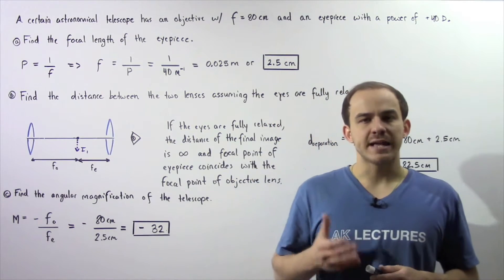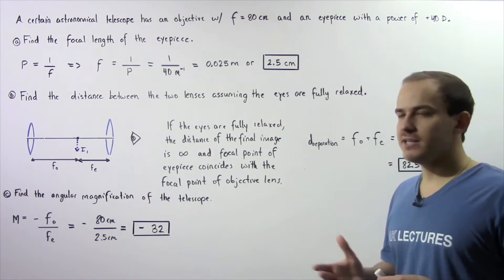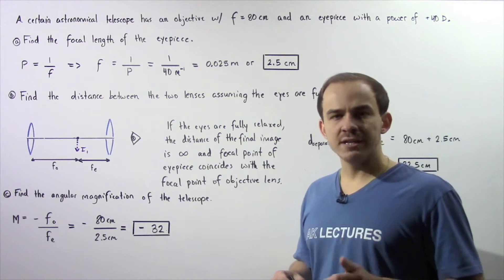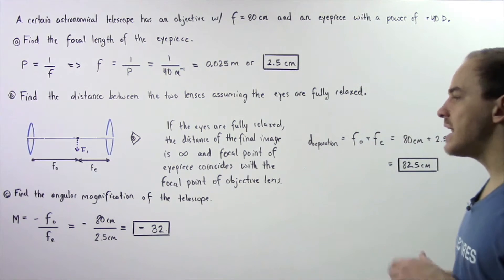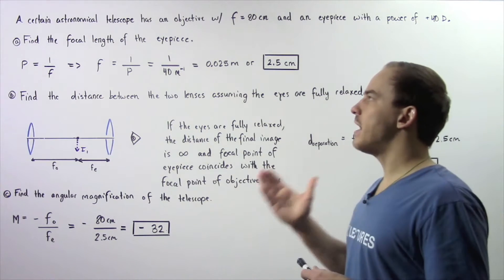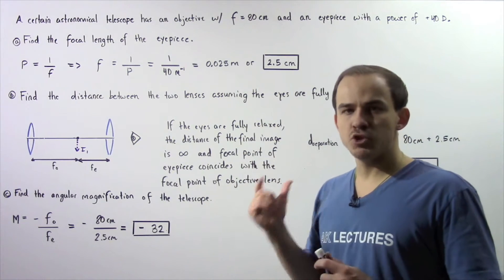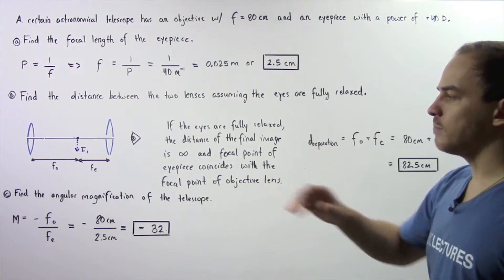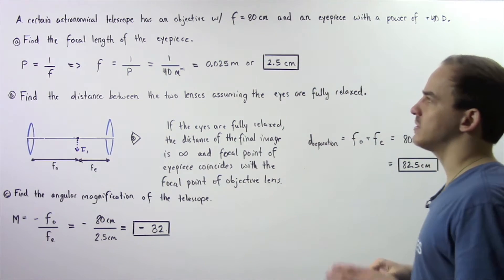In the previous lecture we discussed astronomical telescopes, now let's look at the following example that deals with one. A certain astronomical telescope has an objective lens with a focal length of 80 centimeters and an eyepiece lens that has a power of positive 40D. In part A find the focal length of the eyepiece, in part B find the distance between the objective and the eyepiece assuming the eyes are fully relaxed, and in part C find the angular magnification of our astronomical telescope.